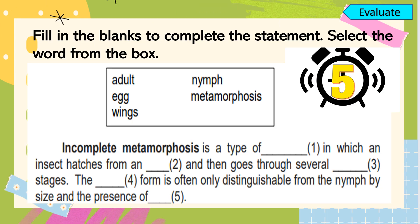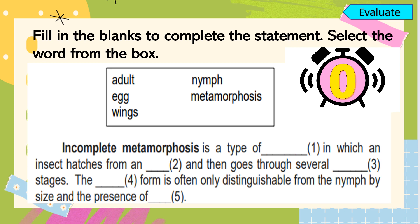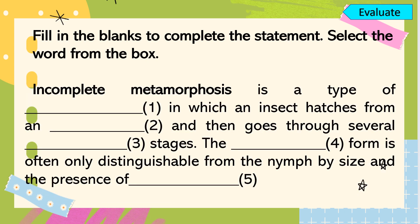To understand our lesson better, please answer the following. You're going to fill in the blanks to complete the statement. Select the word from the box and write it in your notebook. Let's check your answers: number one is metamorphosis, number two is egg, number three is nymph, number four is adult, and number five is wings. I do hope you got a perfect score.